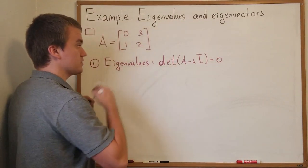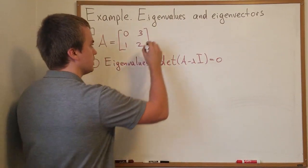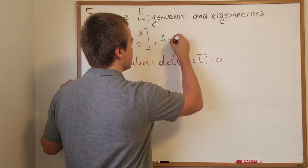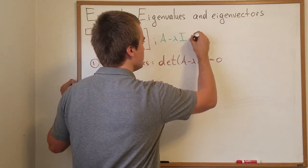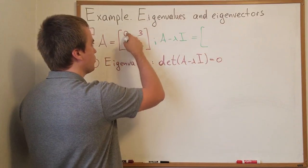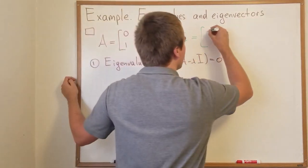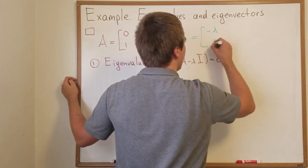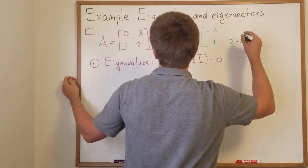So let's write the determinant of A minus lambda I. A minus lambda I is just going to be a matrix the same as A but I'm going to subtract lambda for my main diagonal. So I'm going to have minus lambda, 1, 2 minus lambda, 3.